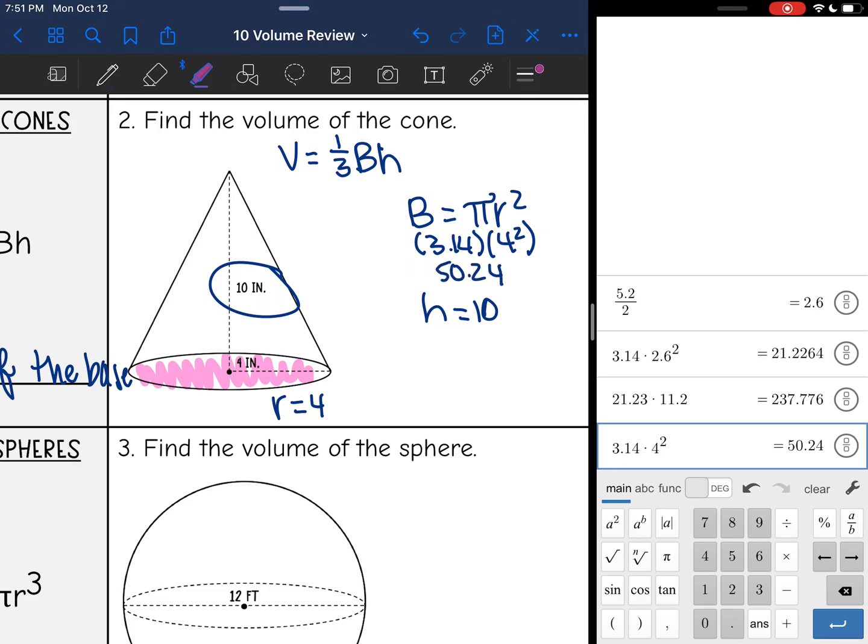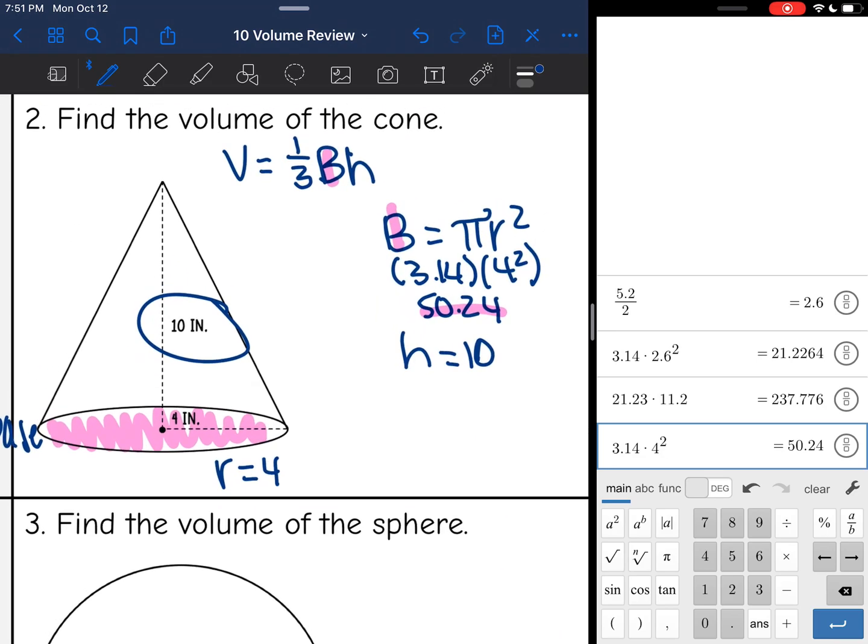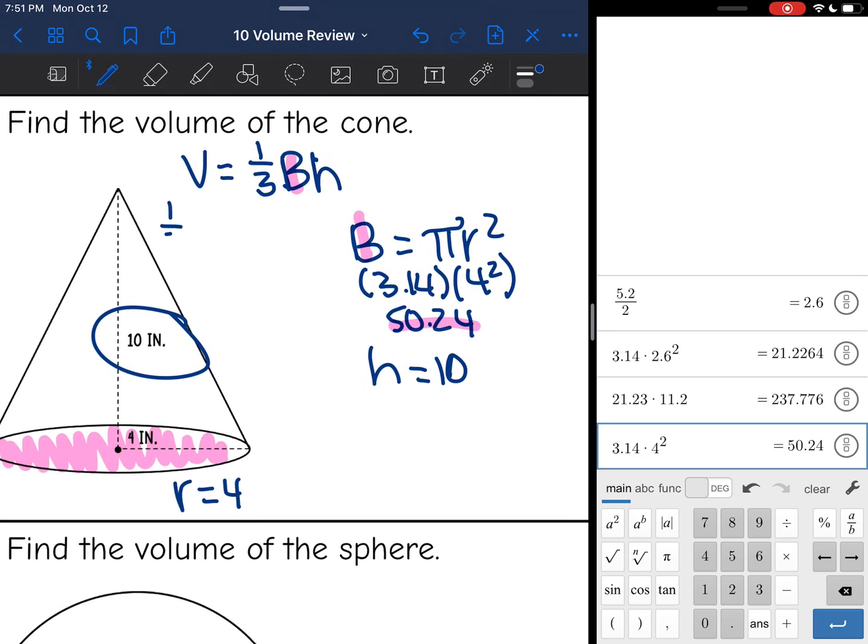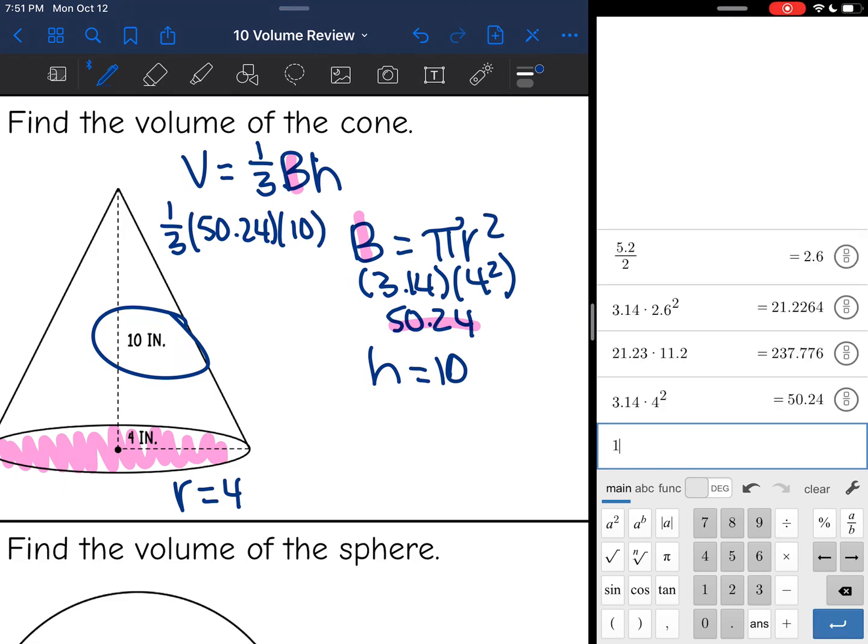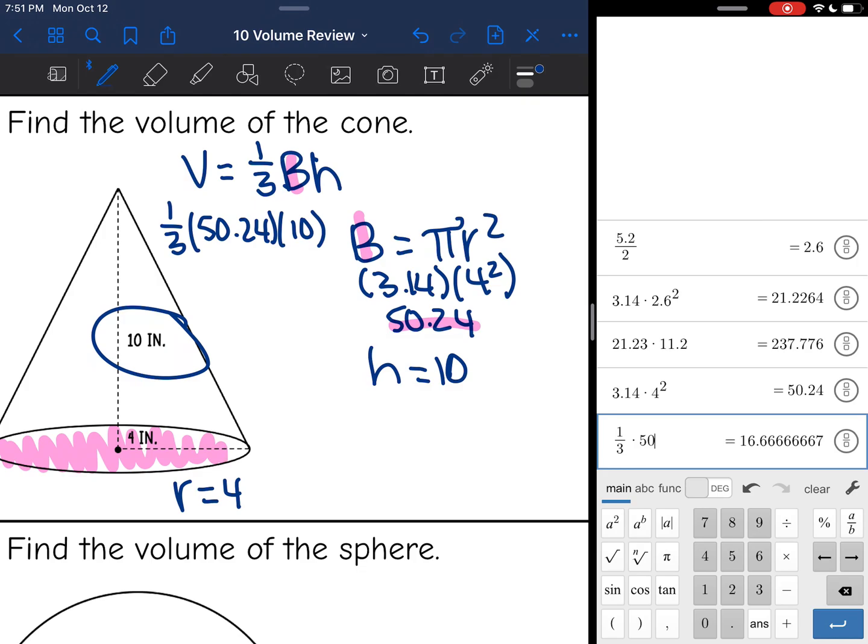So I have everything I need. I have the base, I have my height, and I'm ready to substitute into my formula. So I'm going to do one-third times my base, which was 50.24 times my height of 10. And one-third times 50.24 times 10 is 167.47 inches cubed.